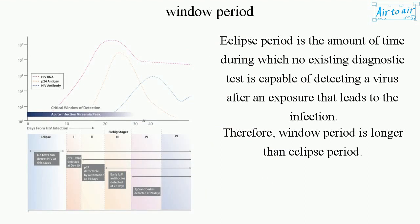The eclipse period is the amount of time during which no existing diagnostic test is capable of detecting a virus after an exposure that leads to infection. Therefore, the window period is longer than the eclipse period.